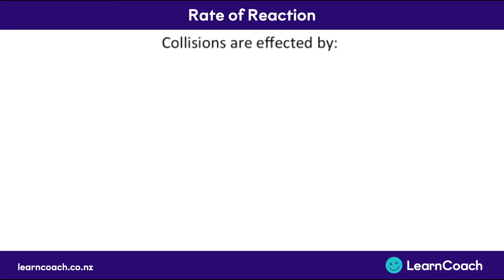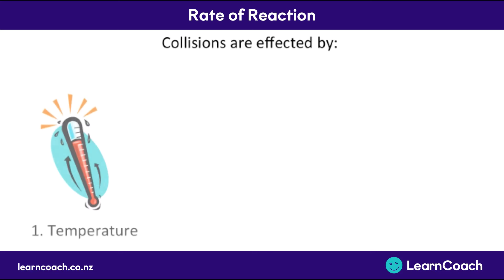Now let's look at four factors that relate to collision theory. The first is temperature. Temperature affects how fast a reaction goes because a high temperature means high energy. Increasing the temperature gives your reactants lots of energy, meaning lots of atoms will have enough energy, so there'll be a higher frequency of reaction. This ticks both boxes for collision theory.